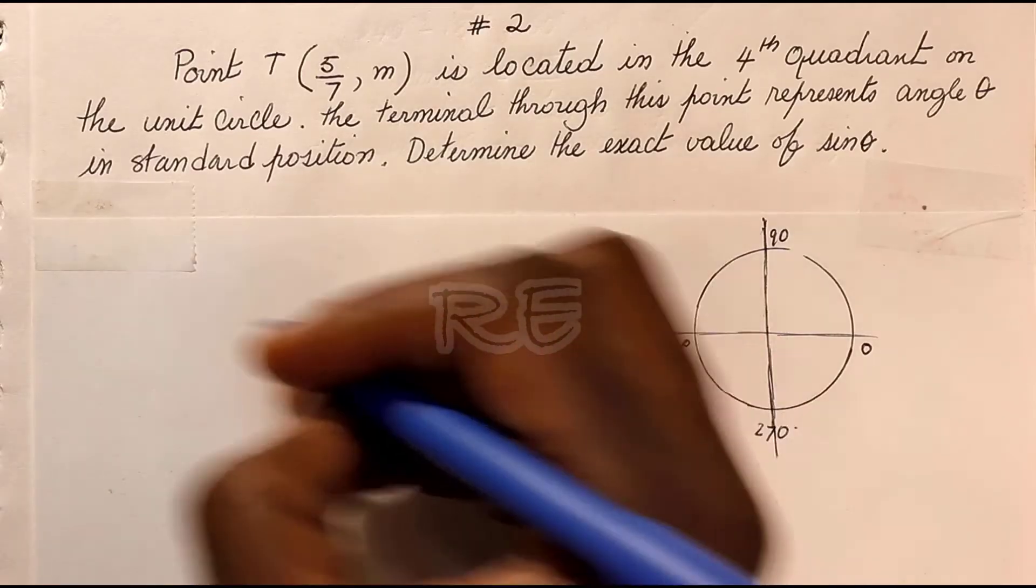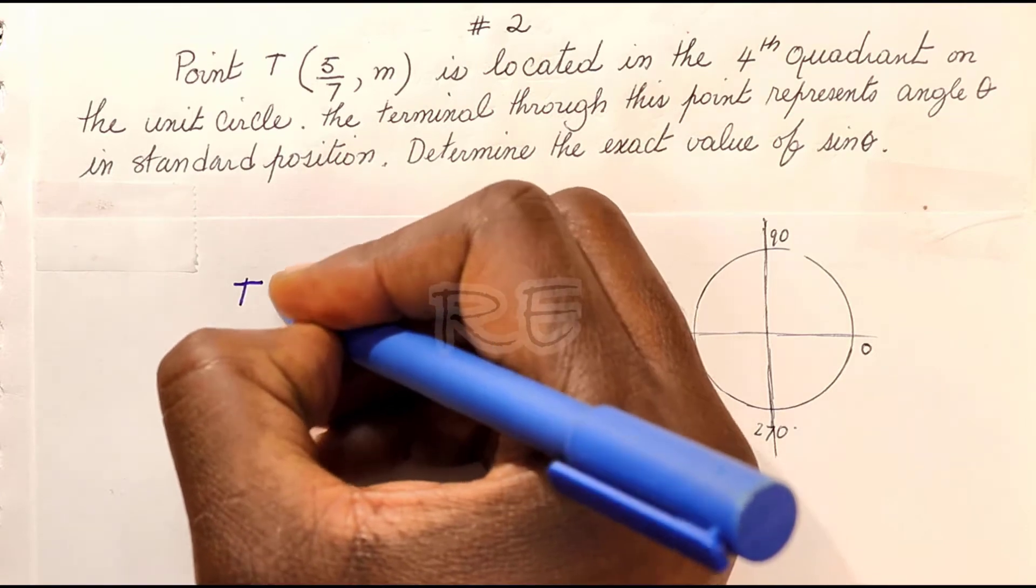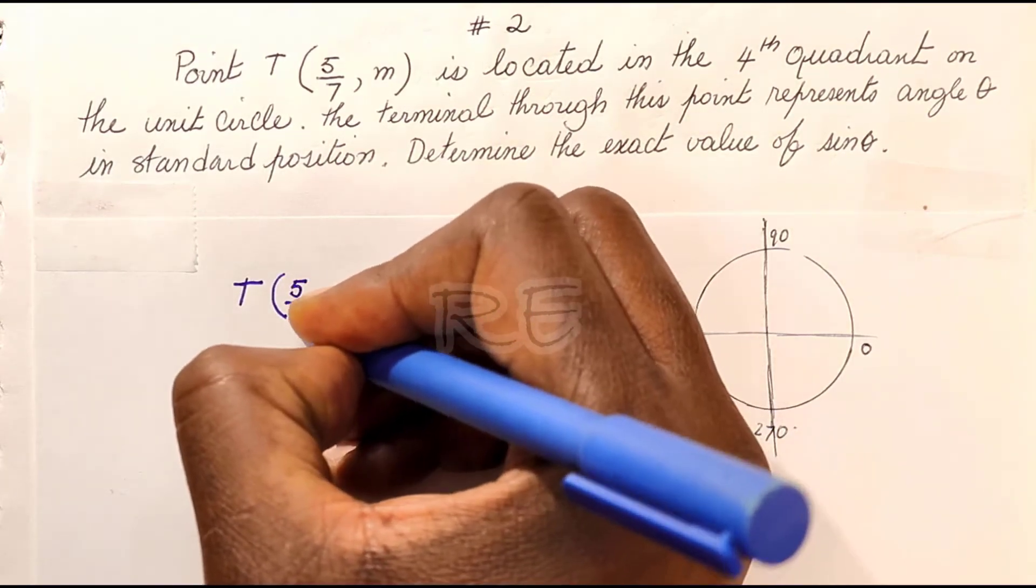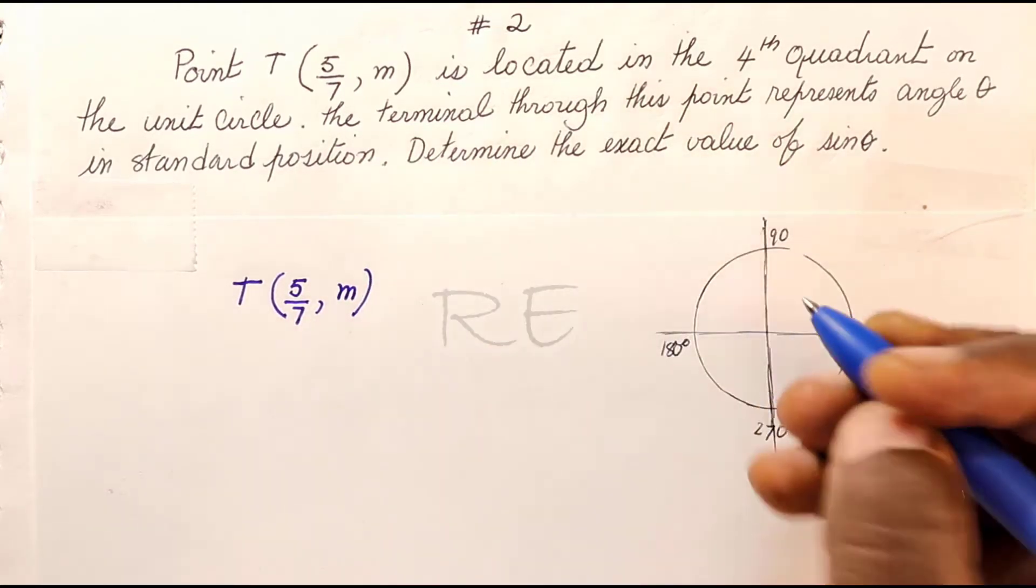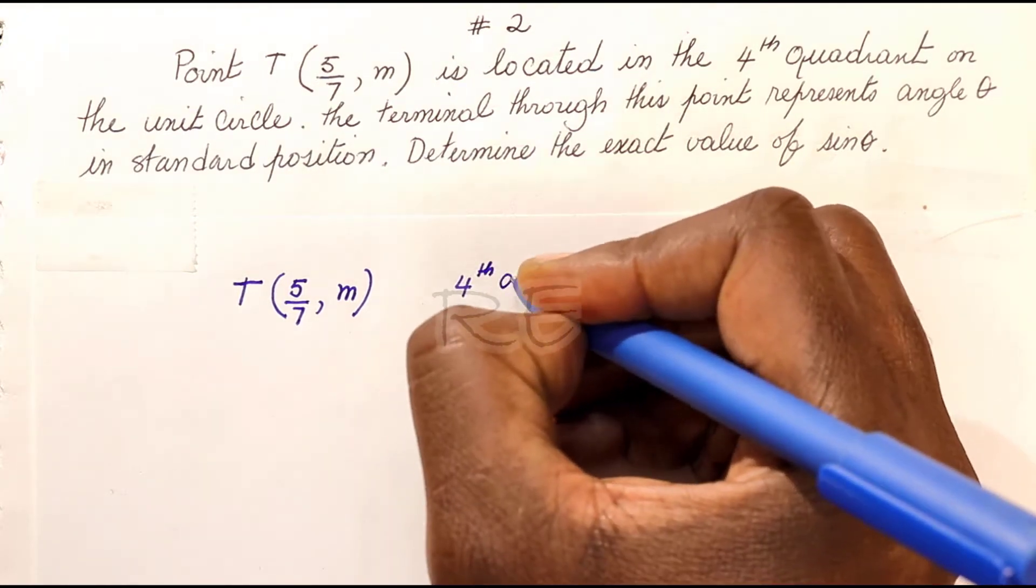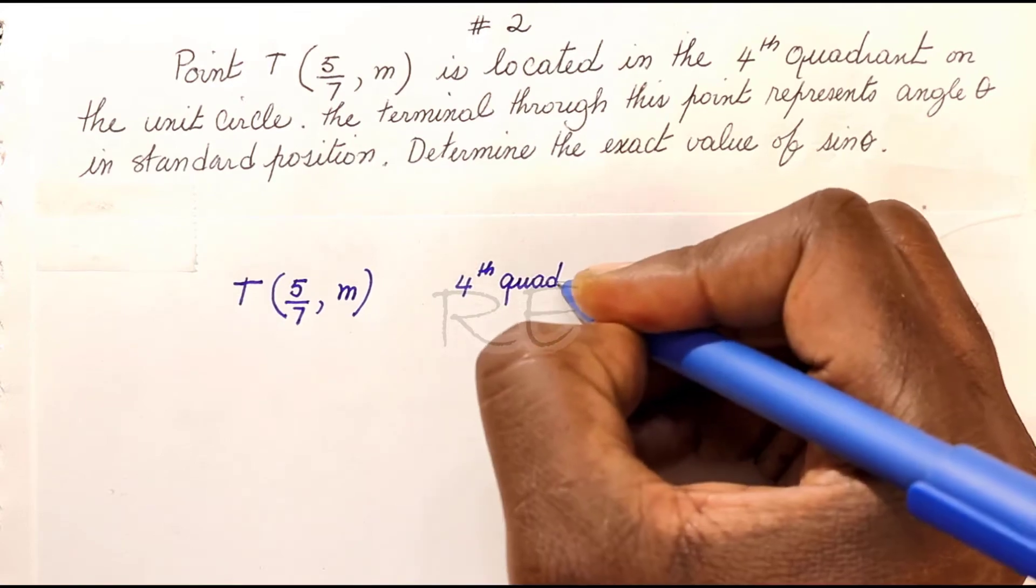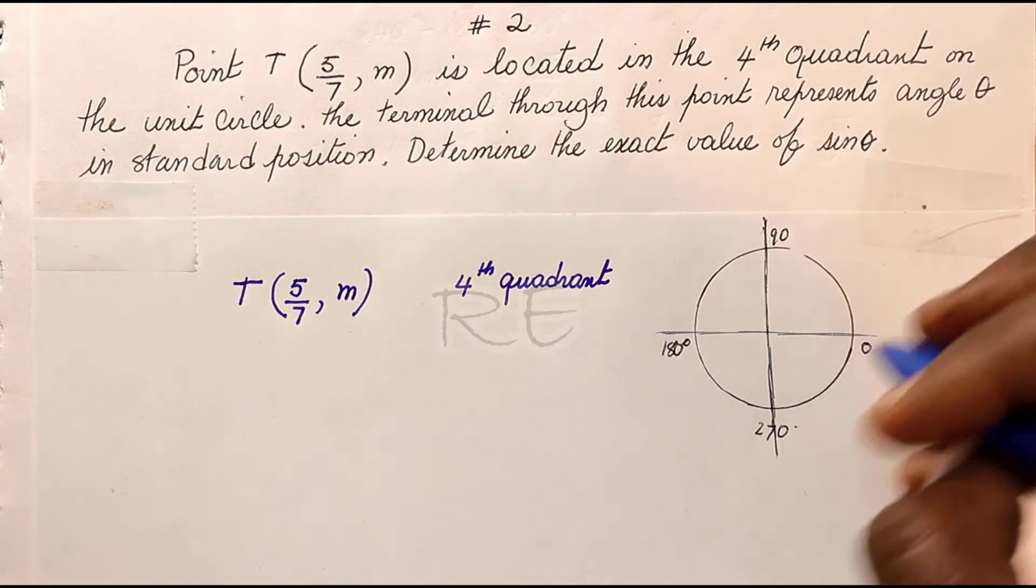For number 2, point T is equal to 5 over 7 comma M and it's located in the fourth quadrant on the unit circle.